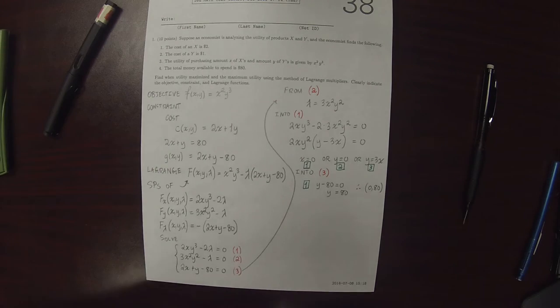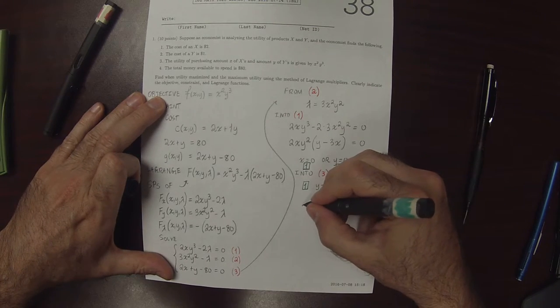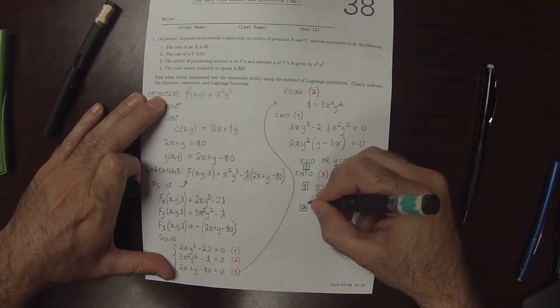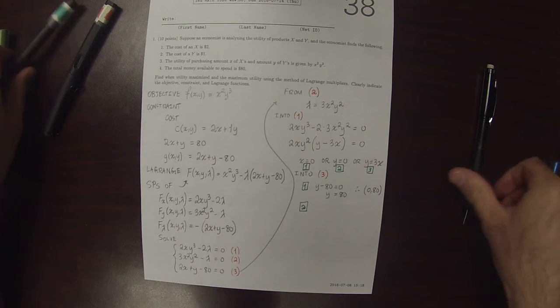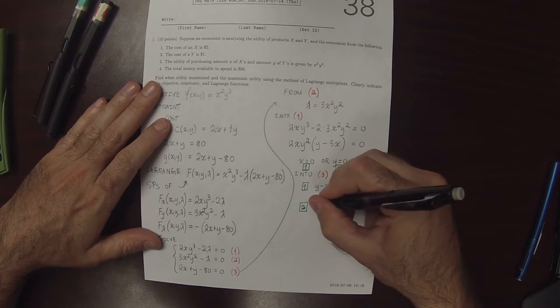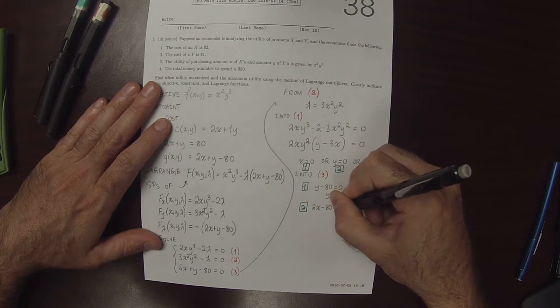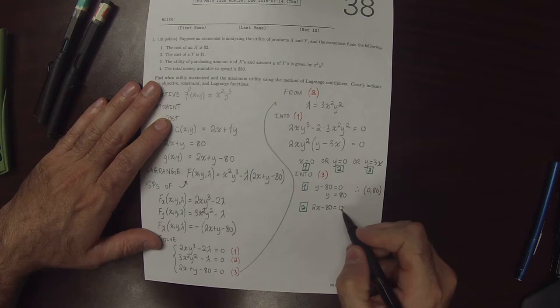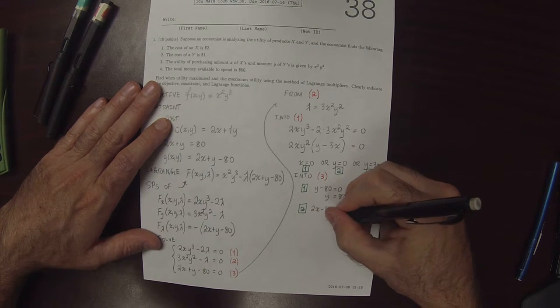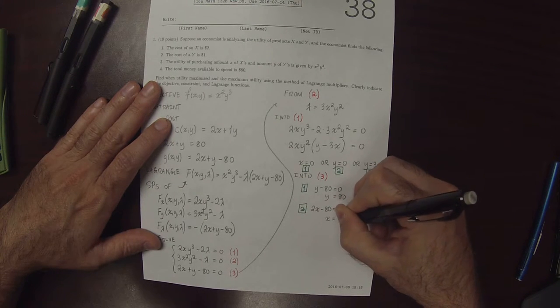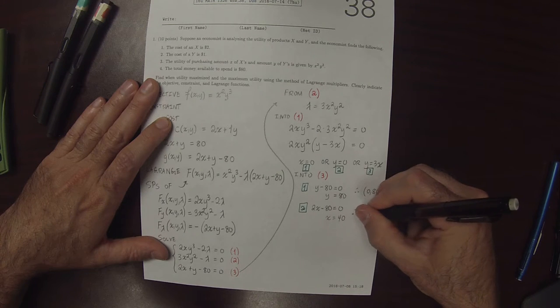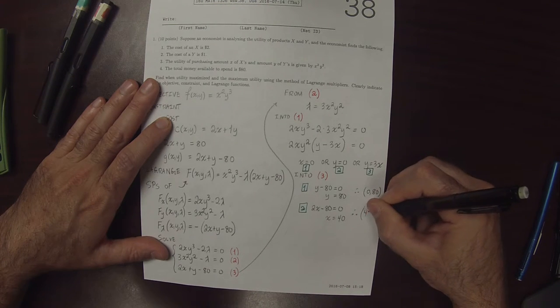If we use case 2, we plug in y equals 0. That gives us 2x minus 80 equals 0. Putting the 80 on the other side and dividing by 2, that gives us x is 40. So we have another stationary point, 40, 0.